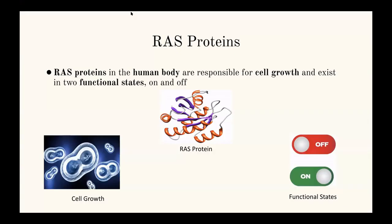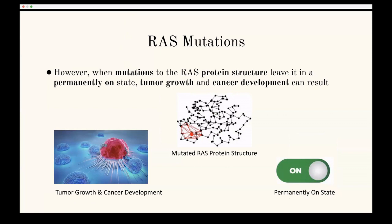Starting off with RAS proteins — as you may have learned in your life sciences classes, proteins are a big group of biological bodies. RAS proteins specifically in the human body are responsible for cell growth and exist in two functional states: on and off. These are regulatory states. As with any protein, they're made up of several amino acids in a chain, which are then folded into a complex structure. RAS has 166 amino acids, and at each of these points mutations can occur during the replication process. Mutations to RAS in particular leave it in a permanently on state, which is specifically bad because this can lead to tumor growth and cancer development, since RAS proteins are a form of proto-oncogenes — a specific subclass of proteins related to cancer.